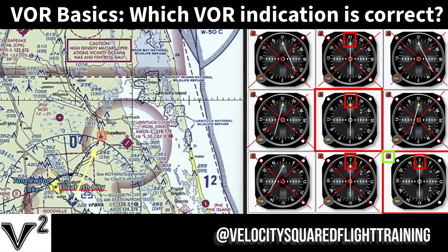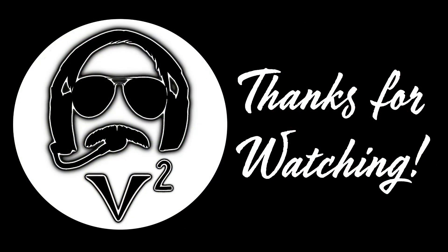One more thing to reiterate: don't mix up the town of Shawboro with this airport. The town of Shawboro is right here. The name can look like it belongs to the airport, but remember — airport names are always in the magenta font. Alright, good luck with that. That's how that question works. I hope you guys pass your tests. Thank you.